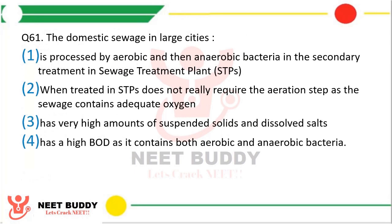Question number 61: The domestic sewage in large cities is processed by aerobic and then anaerobic bacteria in secondary sewage treatment plants. When treated in STPs — does not really require aeration step as the sewage contains adequate oxygen; has very high amount of suspended solids and dissolved salts; has high BOD as it contains both aerobic and anaerobic bacteria. The correct answer is Option 1: it is processed by aerobic and then anaerobic bacteria in the secondary sewage treatment plant.